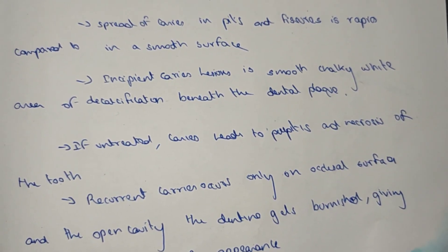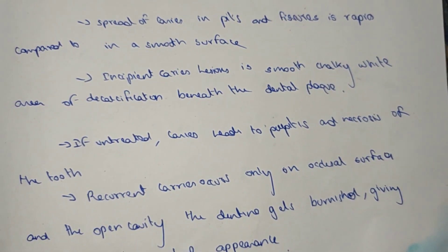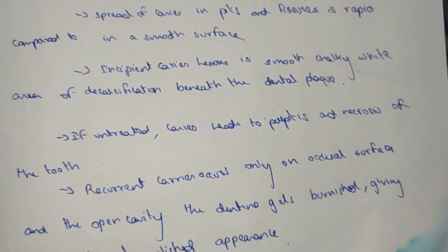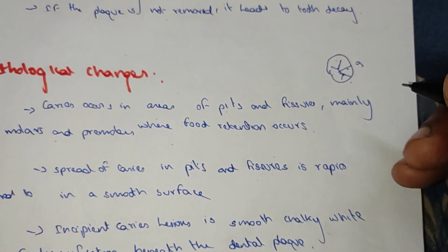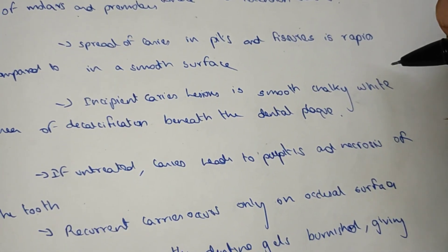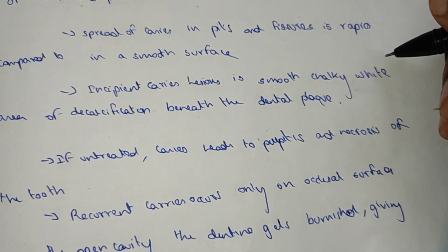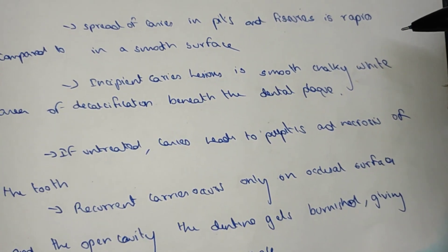The caries will reach the pulp. The tooth has three structures: enamel, dentine, and pulp. In the pulp, blood vessels and nerve fibers are present. When caries reaches the pulp, it causes severe pain.